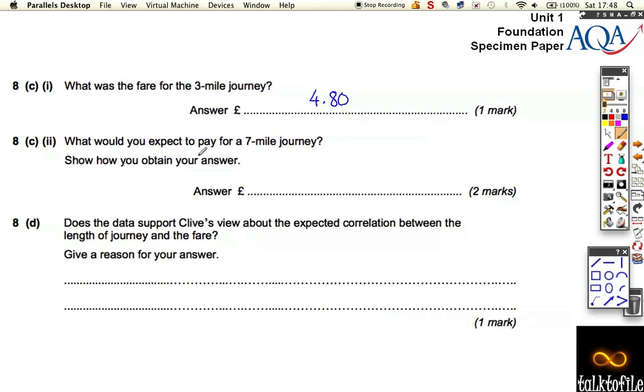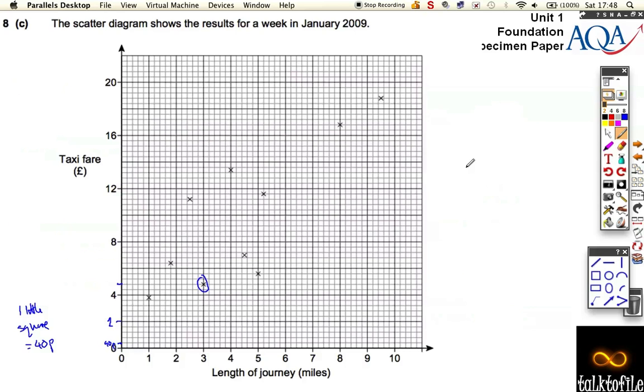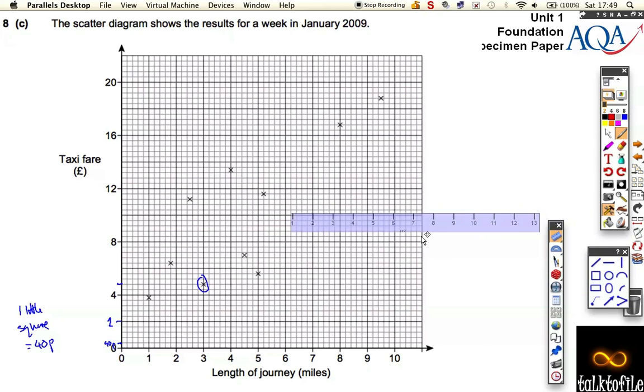What would you expect to pay for a 7 mile journey? Show how you obtain your answer. Well, a 7 mile journey, let's go back, let's look. 7 mile journey, there's no information for a 7 mile journey. So we're going to have to draw a line of best fit. Now, I reckon that if you get your ruler out and you try and line up your ruler, that your line of best fit is going to be something like that. Somewhere along there is your line of best fit. So let's draw that in. Let's have a look. We've got a couple of points above and a few points below. It looks something along those lines, doesn't it? So let me just throw my ruler away, get it out of the way. Now let's go 7 miles up now, and we come across here, don't we?